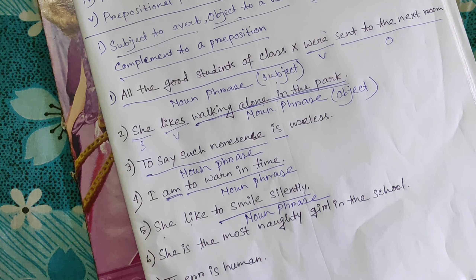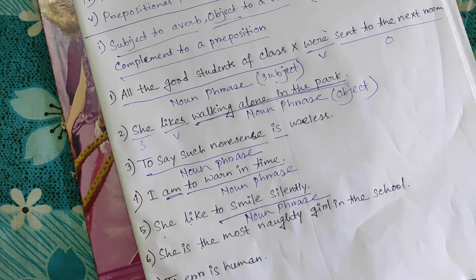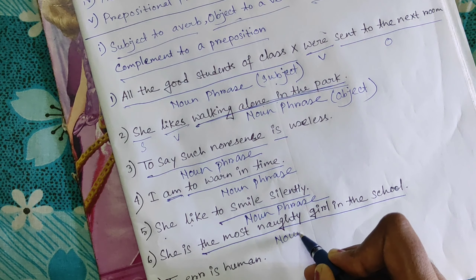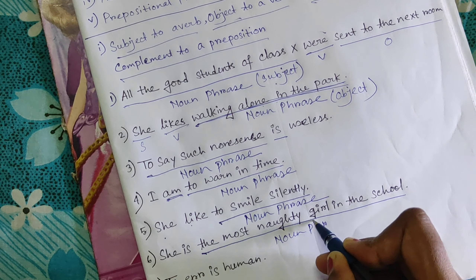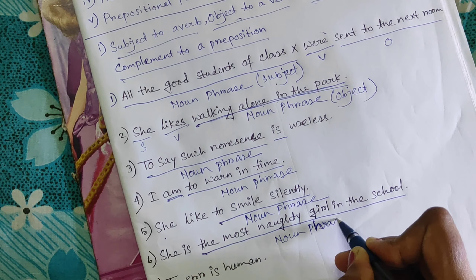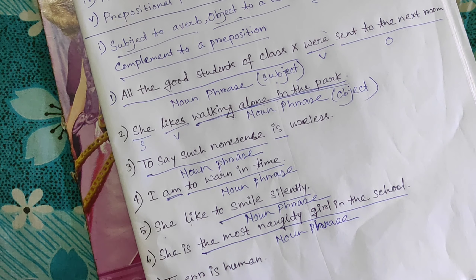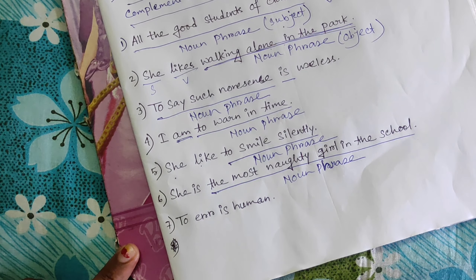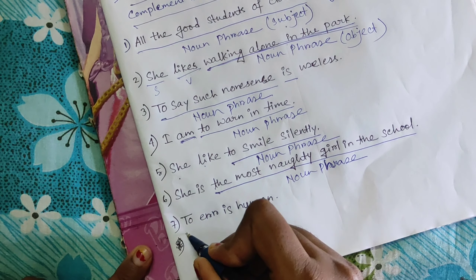Next example for adjective phrase: 'She is the most naughty girl in the school.' Here 'the most naughty girl in the school' is a phrase. It does not contain a finite verb, so it qualifies as a phrase.